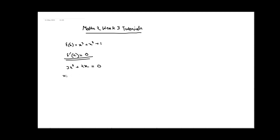Now let us find the critical points. Solving 3x² + 2x = 0, we can factor this as x(3x + 2) = 0. There are two critical points: one is x = 0 and the other is x = -2/3.